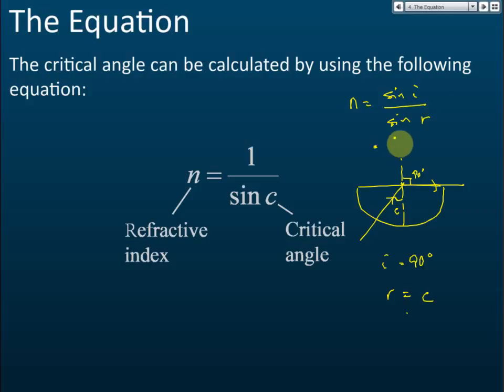If you use your calculator to find sine 90 degrees, you'll find it is equal to one. So then we have one over sine c.